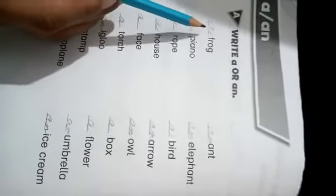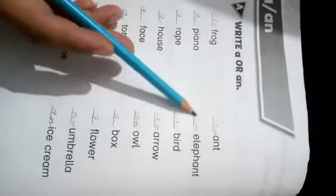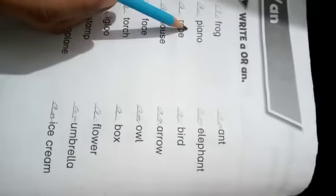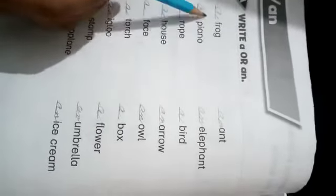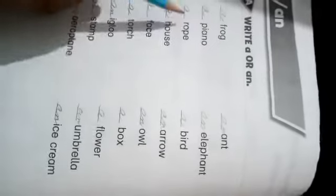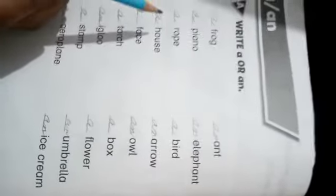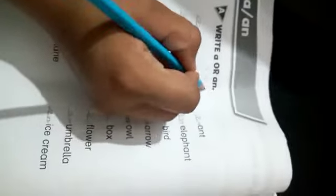میں نے آپ کو A and N کا use بتایا تھا. جو ووول لیٹرز ہوتے ہیں ان کے ساتھ N use ہوتا ہے. I, E, O, U.